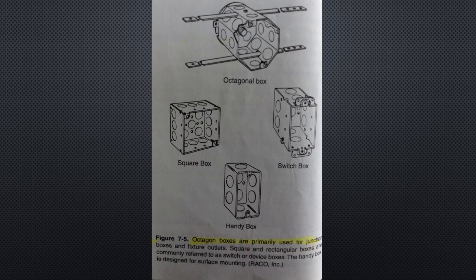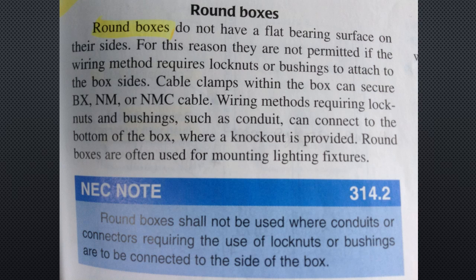Round boxes: round boxes do not have a flat bearing surface on their sides. For this reason, they're not permitted if the wiring method requires lock nuts or bushings to attach to the box sides. Cable clamps within the box can secure BX, NM, and NMC cable. Wiring methods requiring lock nuts and bushings, such as conduit, can connect to the bottom of the box where the knockout is provided. Round boxes are often used for mounting lighting fixtures. NEC note 314.2: round boxes shall not be used where conduit or connectors requiring the use of lock nuts or bushings are to be connected to the side of the box.